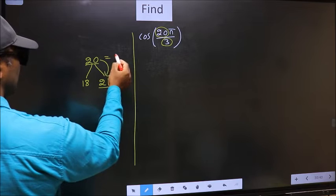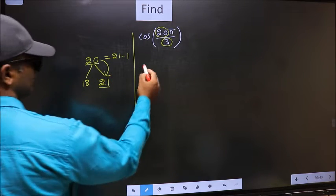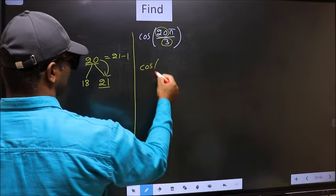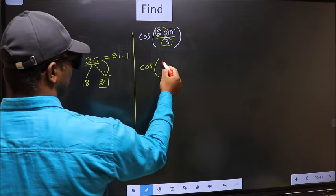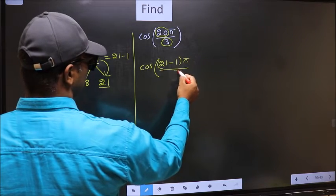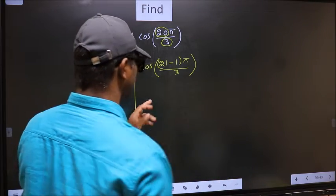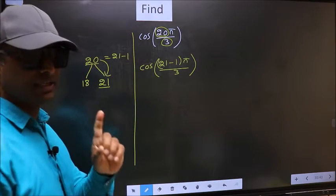So now 20 should be written as 21 minus 1. So this will become cos. In place of 20, now you write 21 minus 1, π by 3. This is your step 1.